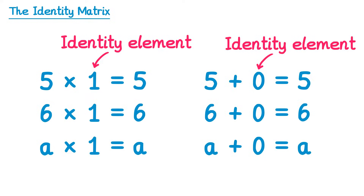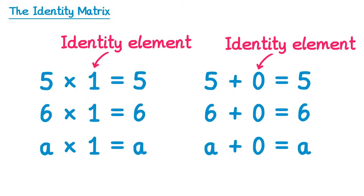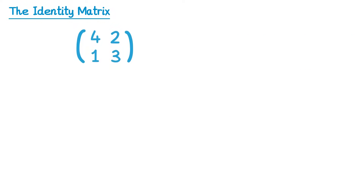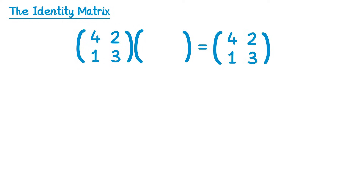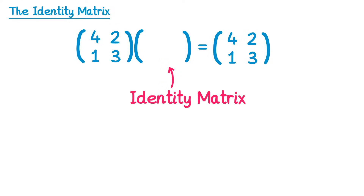Now what does this mean for matrices? Well, if we started with a matrix like this one — four, two, one, three — and we multiplied it by another matrix, but we ended up with the same result, four, two, one, three, then this matrix here must be an identity element, and we call it the identity matrix.